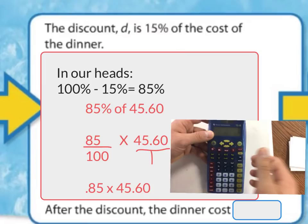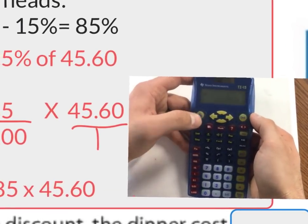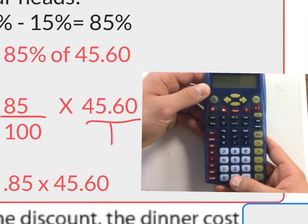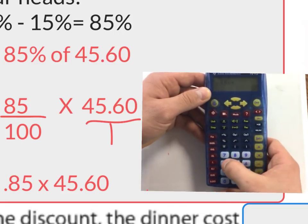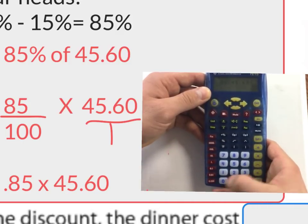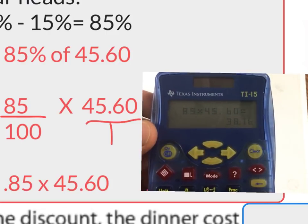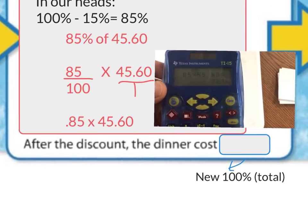Watch closely. We have a calculator here. I cleared my memory and pressed on. So I have 85% — I'm going to press the decimal: 0.85 of $45.60, equals. Now I have my new total of what I'm actually going to pay. After the discount, the dinner costs $38.76 as shown on the calculator.